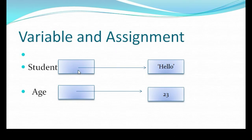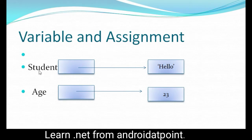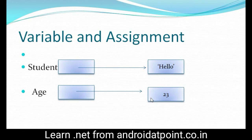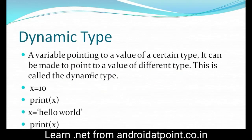Look here — this represents memory. This is the named entity, or you can say labeled storage location. 'Student' is a labeled storage location storing the value 'hello', and 'age' is another labeled storage location storing the value 23.